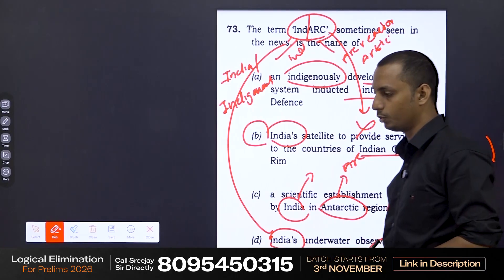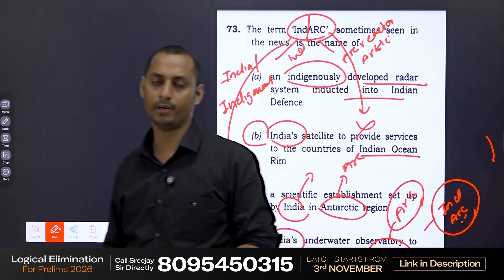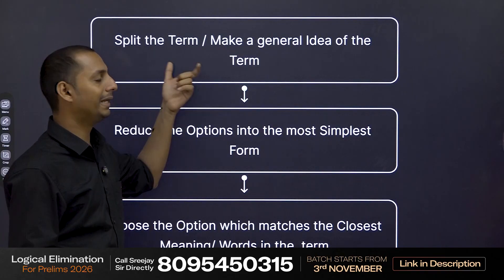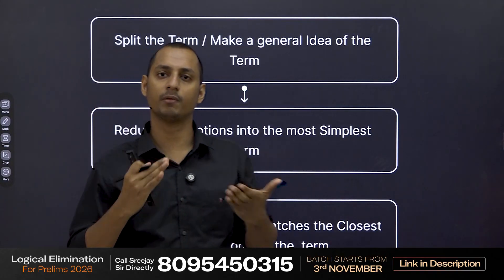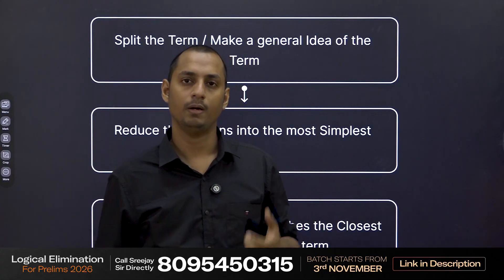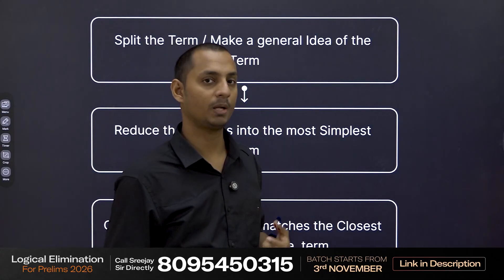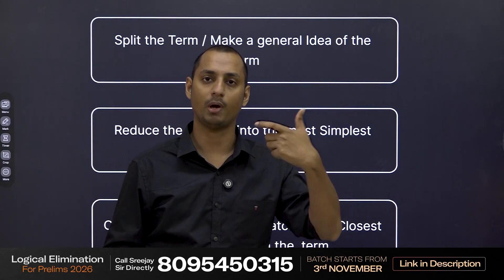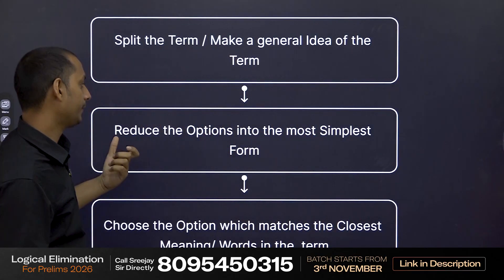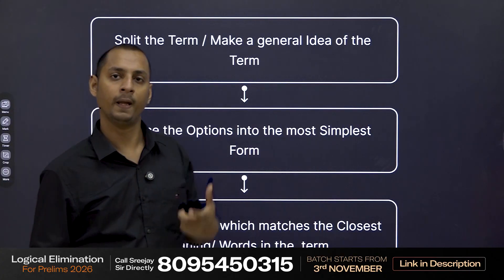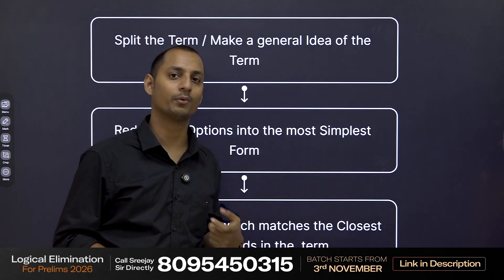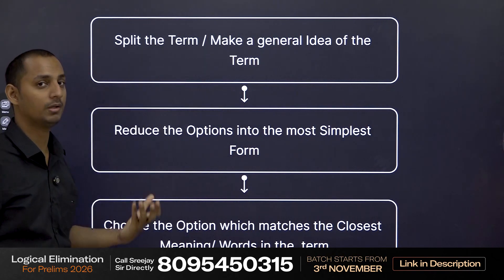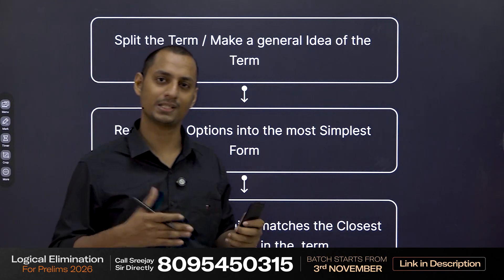That is how you handle these types of questions. First, make a general meaning or a general idea of the term. Basically split the word — for example, for YMAX, Y can be related to Wi-Fi, polar code, or some kind of code in the polar region. After doing the same, simplify the options into the most simple form. Then go with that option which satisfies the general idea or even the words in the question.